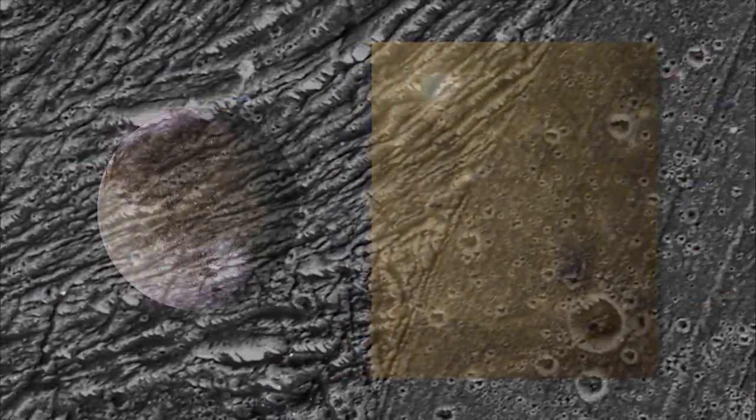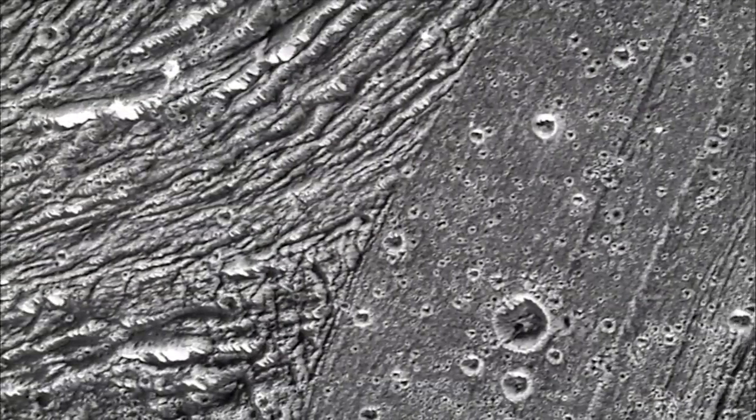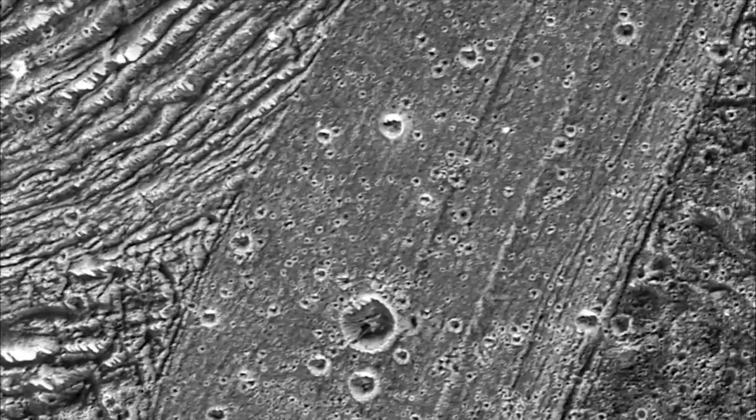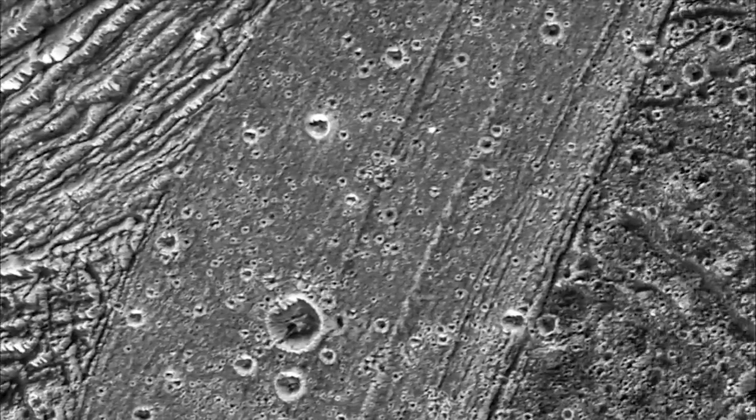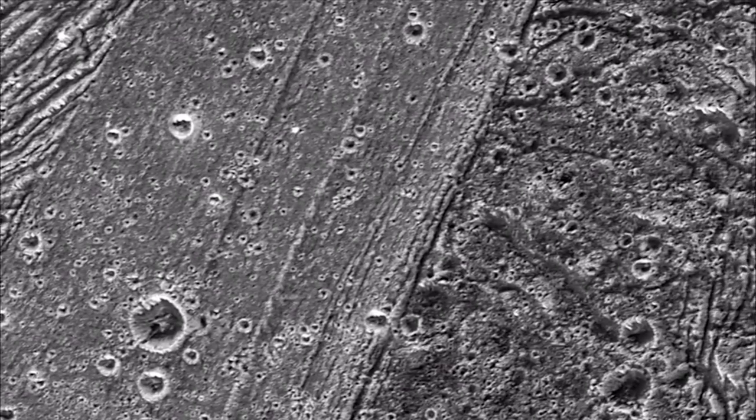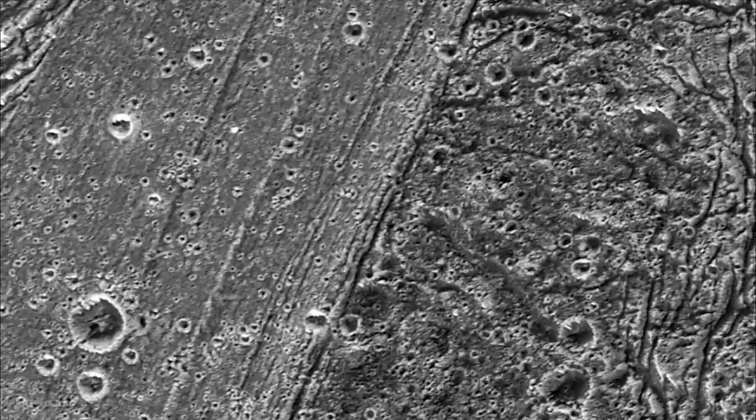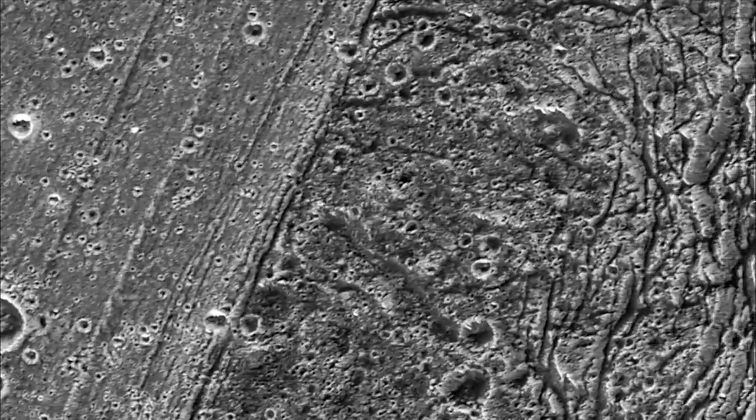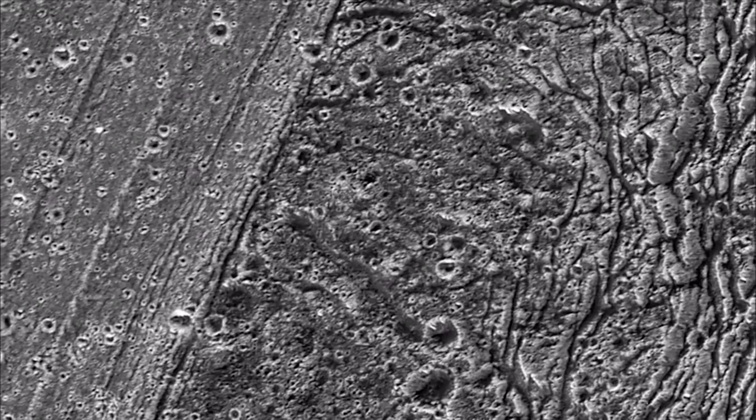Exactly how these grooves and ridges formed is still a big mystery. It is clear Ganymede has a warmer interior than Callisto. In the past, that warmth may have risen up through Ganymede's interior and forced sections of its surface to drift apart just like the continents on Earth.